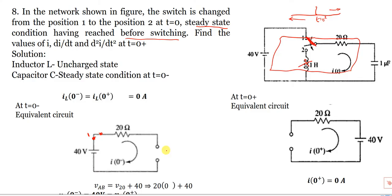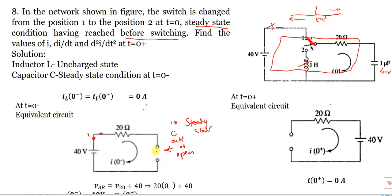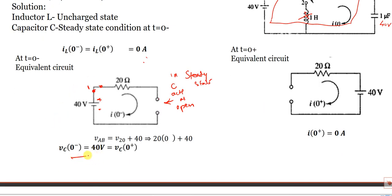Consider a switch - when you close it, the capacitor starts acting as a short circuit and begins charging towards 40 volts. When steady state is reached and the capacitor is fully charged at 40 volts, it then acts as an open circuit. In steady state, capacitor acts as open circuit and is fully charged to 40 volts - plus at one terminal, minus at the other. So initial voltage across capacitor is 40 volts before switching.